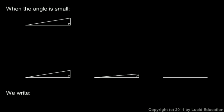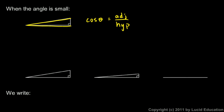Now let's look at the same ideas but dealing with the cosine of an angle. For a small angle, this is our angle theta, and we know that the cosine of theta is the length of the adjacent side divided by the length of the hypotenuse. You should be able to see from this picture that when the angle is small, the adjacent side and the hypotenuse are nearly the same length, so the cosine of theta will be close to 1.